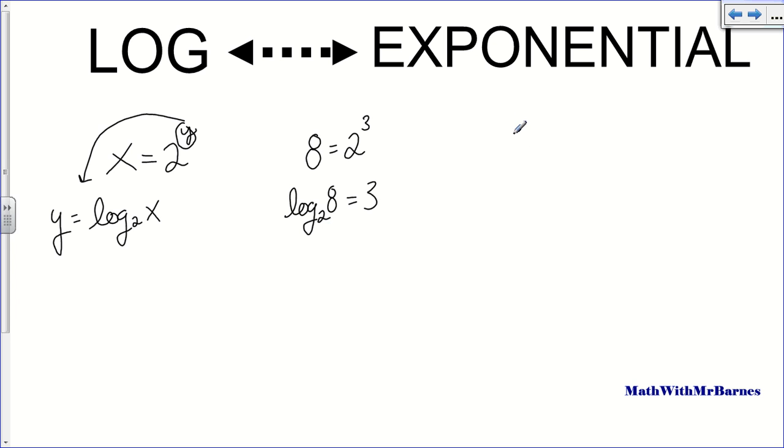What if we have the other way around? Let's say we have something like this: y is equal to log 5 of x. So again, I'll use the same phrase. The base of my log is the base of my exponential, so 5. Then what it equals is my exponent. And then what's inside is what it equals. Just like that.